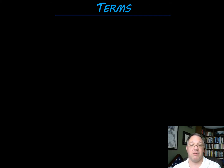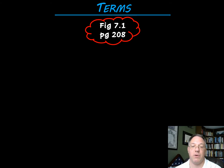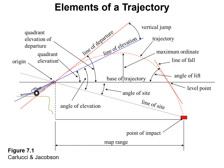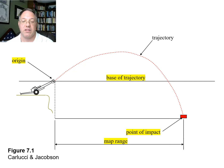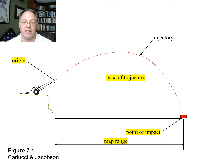To introduce this block we need to cover some terms. Take a look at figure 7.1 on page 208 of the textbook — it's a really good figure. Let's break it down. We have our origin of the gun, which is where we launch from at the muzzle. We have the base of trajectory, which is a level imaginary line. For a large gun system like a howitzer, it might not necessarily be the ground, but the base of trajectory is always a level line regardless of what the terrain is doing.